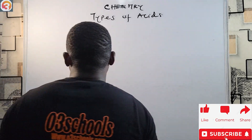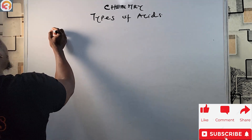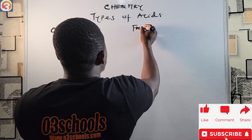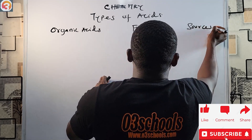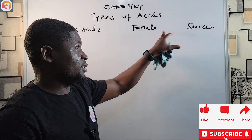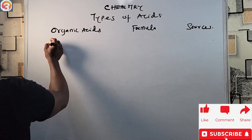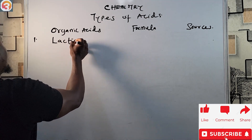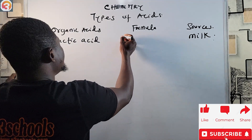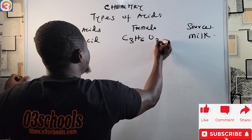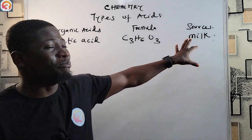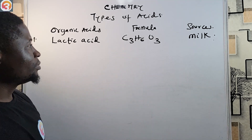Now let's look at organic acids and their sources. First, lactic acid — from the name we know it comes from milk. Its chemical formula is C₃H₆O₃.